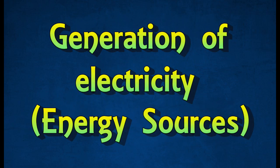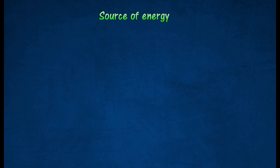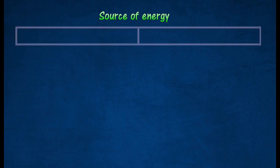Source of Energy and Generation of Electricity. The energy sources used in the generation of energy can be classified as two types: non-renewable energy source and renewable energy source.